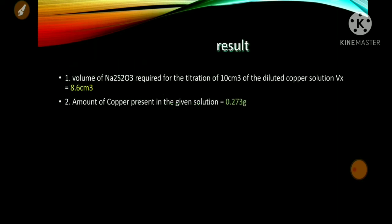Result: the volume of sodium thiosulphate required for the titration of 10 cm³ of the diluted copper solution is 8.6 cm³. The amount of copper present in the given solution is 0.273 g. Thank you.